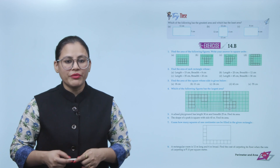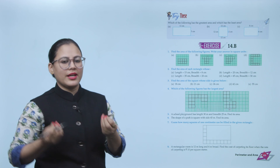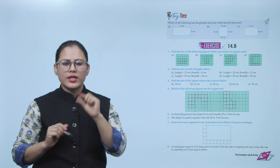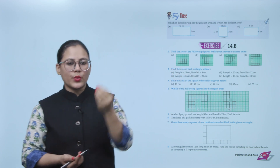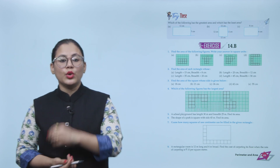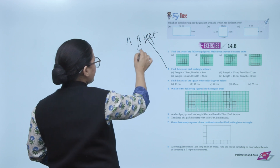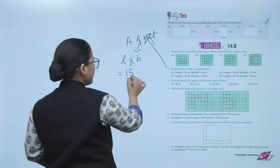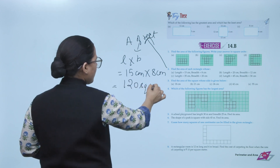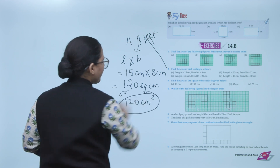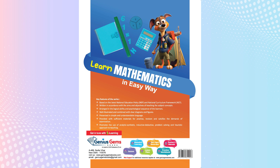Exercise: Find the area of the following figures; write your answer in square units. Count the small squares inside each figure and that count is your area in square units. For example, if there are 8 squares, the area is 8 square units. Next: Find the area of each rectangle — area = length × breadth. Length 15 cm, breadth 8 cm gives 15 × 8 = 120 square centimeters. Students, practice this chapter on your own for 15 minutes.